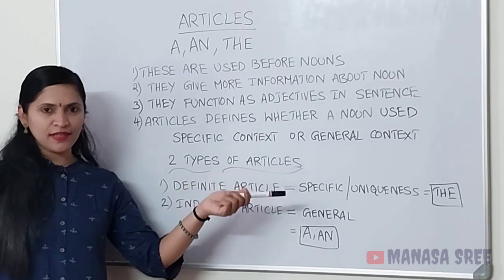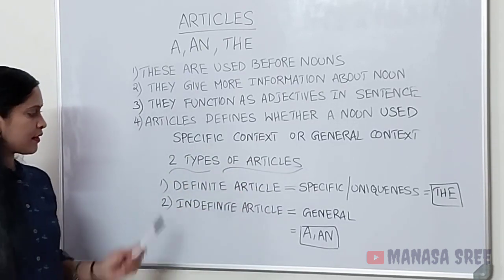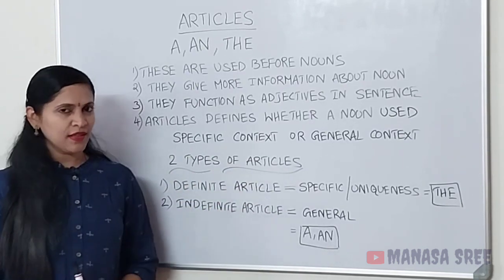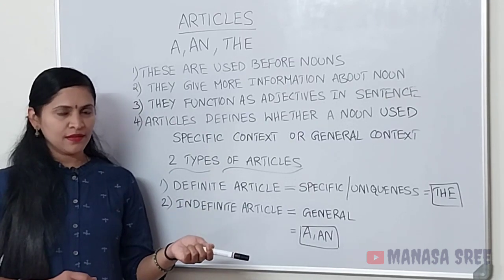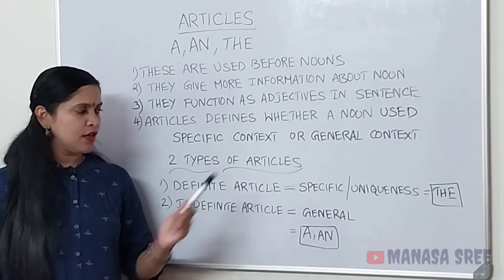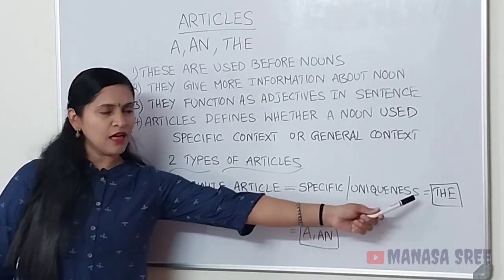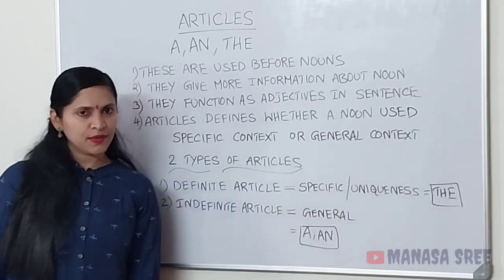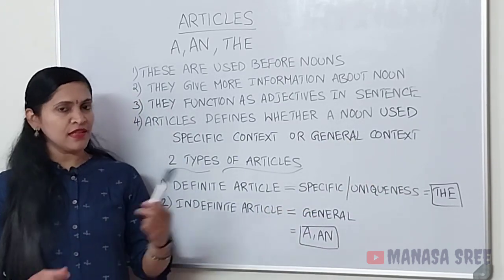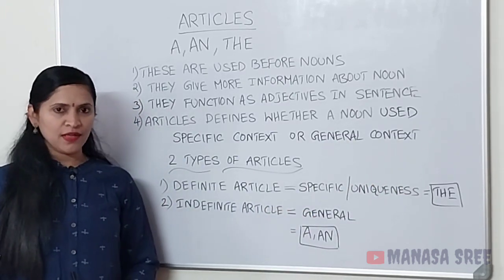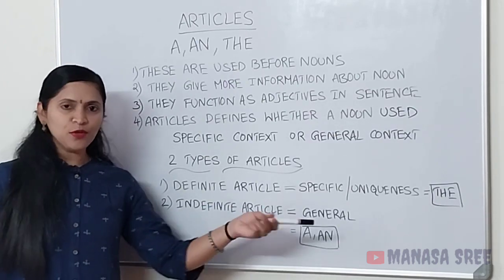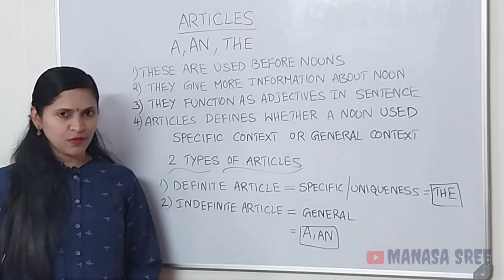Two types of articles: definite article and indefinite article. Definite article means specific aagi, particular aagi, unique aagi hella vaaga, 'the' na use maatthi vi. Indefinite article means general sense naali hella vaaga — general aagi hella vaaga — 'a' and 'an' na use maatthaya thai vi. Ok na friends?